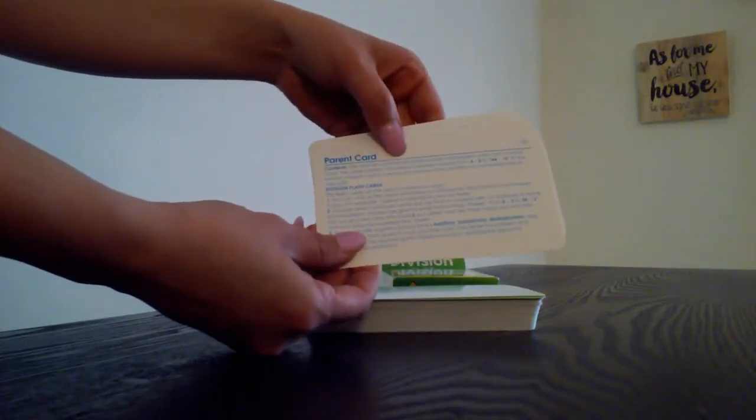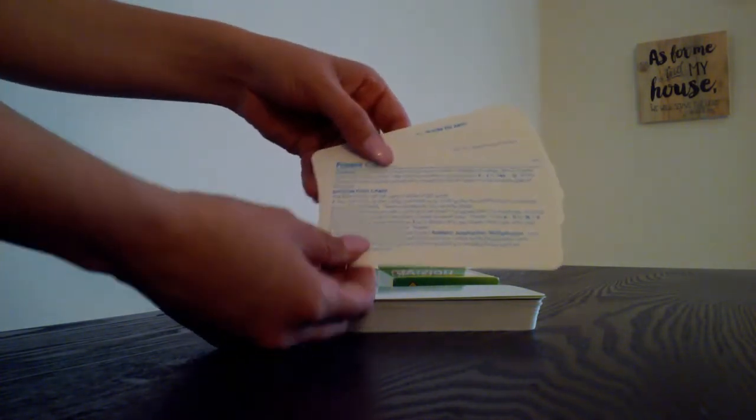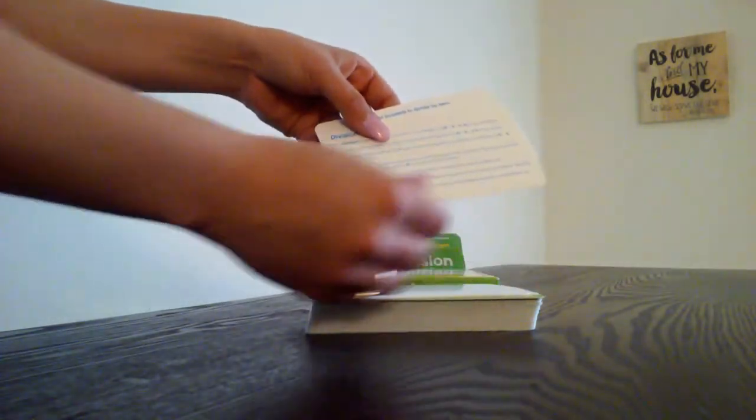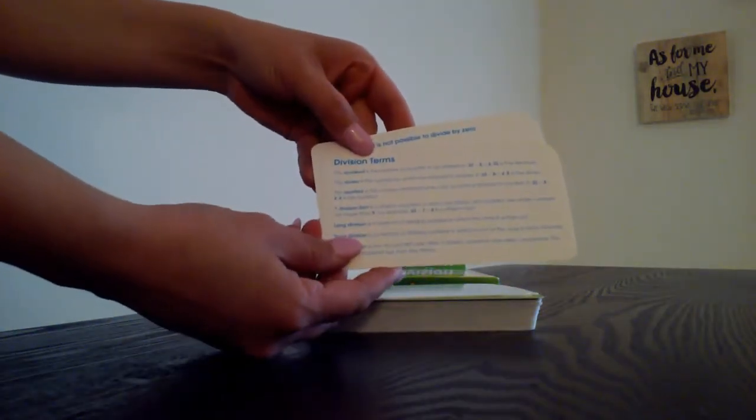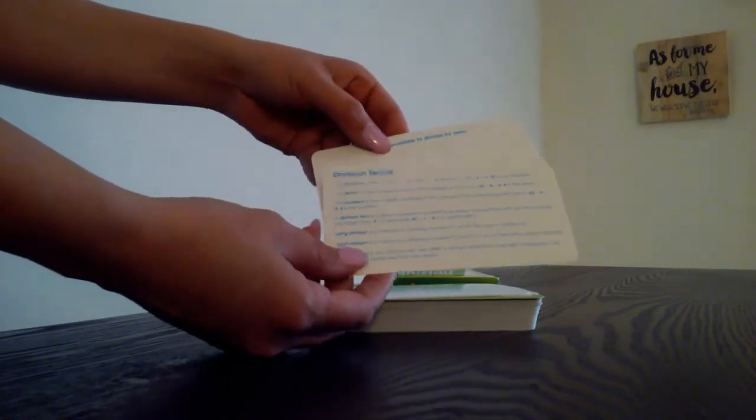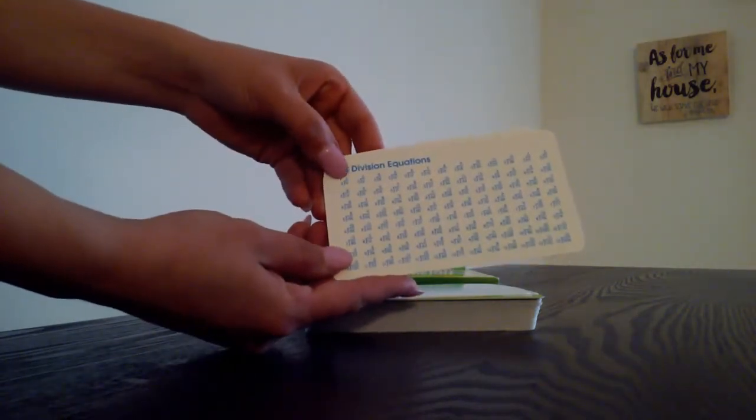You got the parent card that shows you there's 52 cards and three reference cards. It's got some more information on the back, tips for working with your child. You got the division terms so you can explain to your child how division works. It's got some more division problems on the back and the answers.